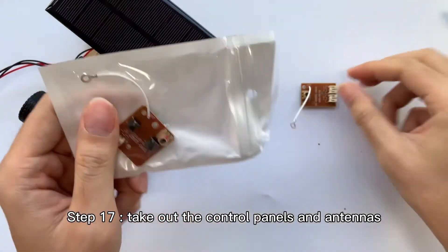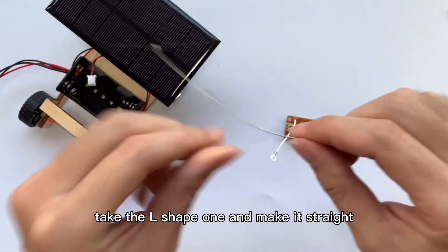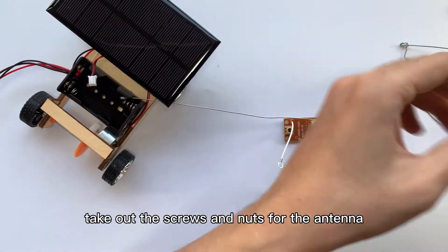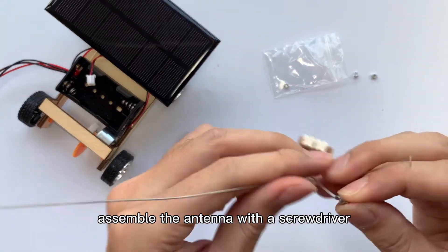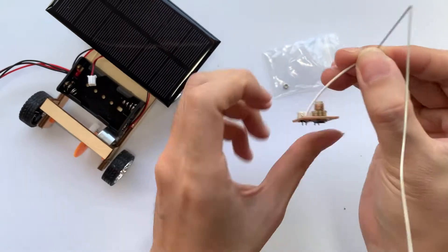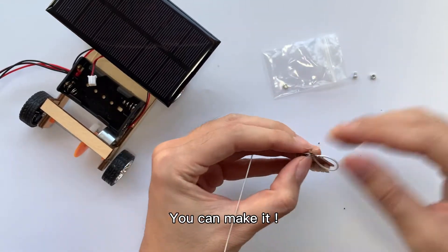Step 17: Take out the control panels and antennas. Take the L-shape one and make it straight. Take out the screws and nuts for the antenna. Assemble the antenna with a screwdriver. Be patient; the screw and nut are small. You can make it.